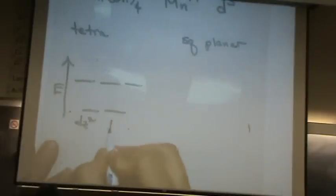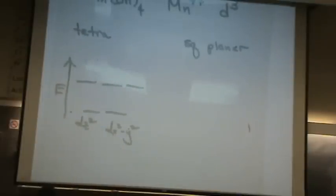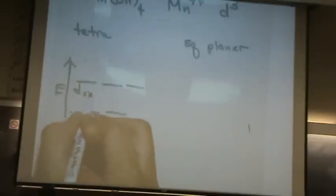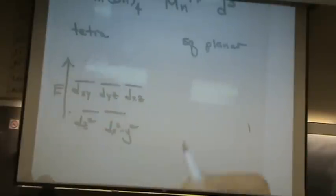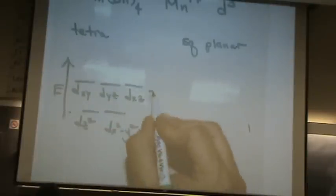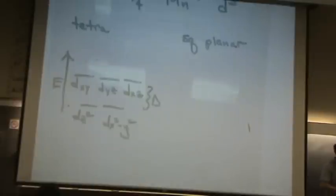D-z squared, D-x squared minus y squared, those are on axis, so they're the lowest energy. Then you've got the d-xy, the d-yz, and the d-xz. So on your exam, label everything. Label, put this here, label delta, do everything.